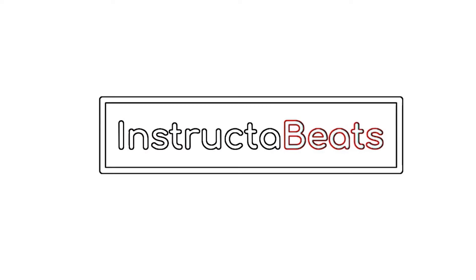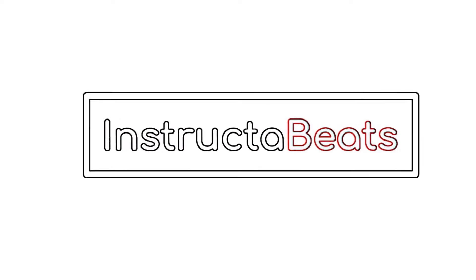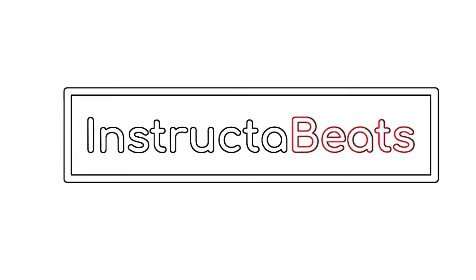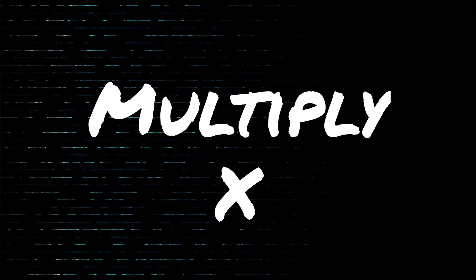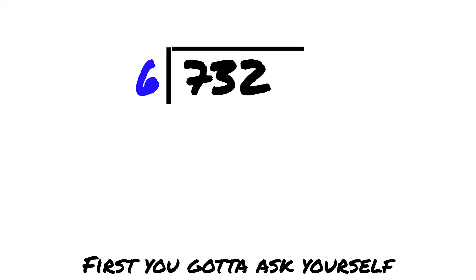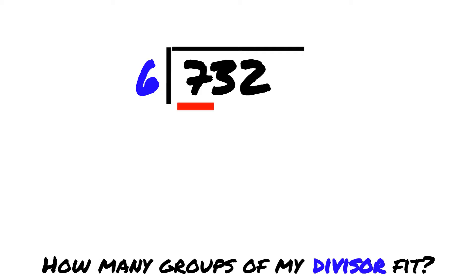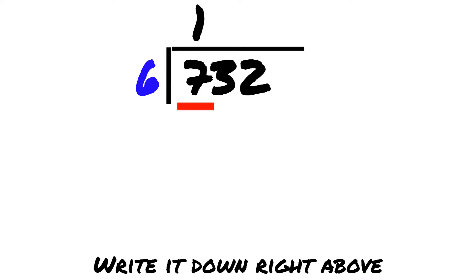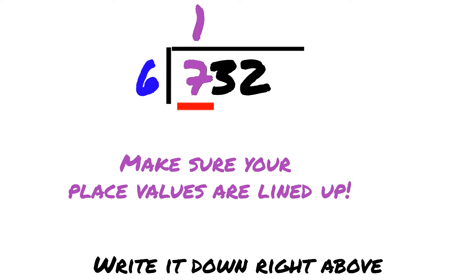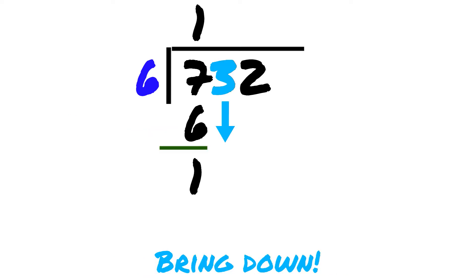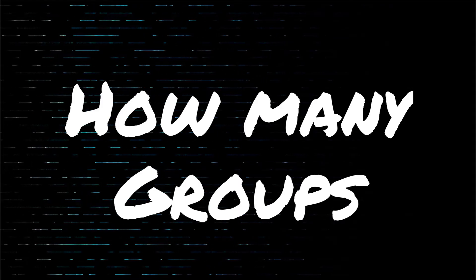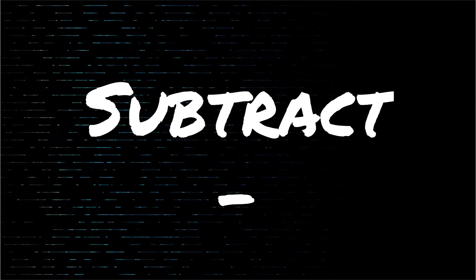How Many Groups, Multiply, Subtract, Bring Down. First you gotta ask yourself how many groups of the divisor fit. Write it down right above so that the place values line up so you don't forget. You still gotta multiply and write underneath the product, then subtraction comes next. Did you drop beneath? You're feeling it. How Many Groups, Multiply, Subtract, Bring Down.